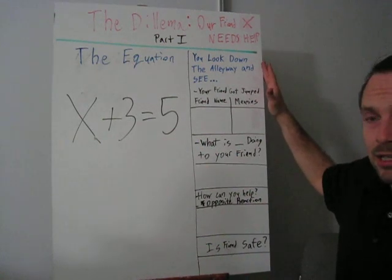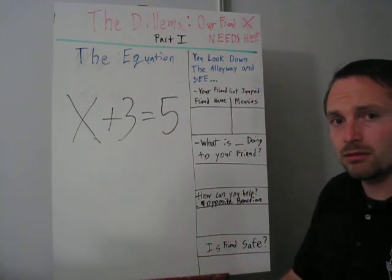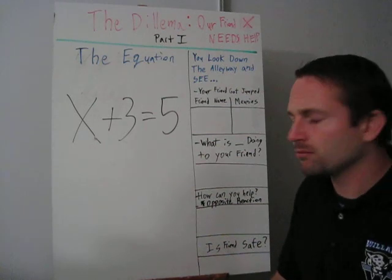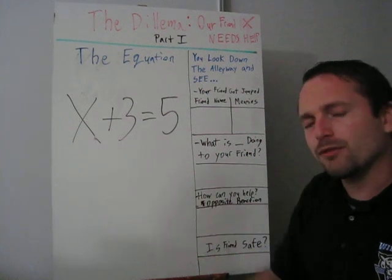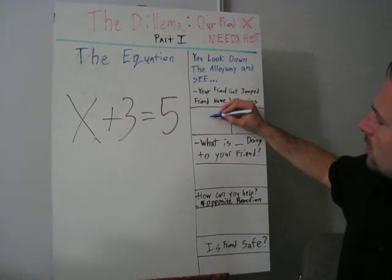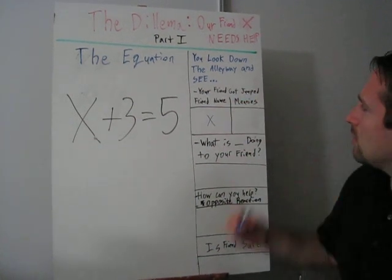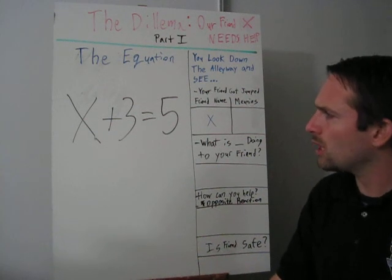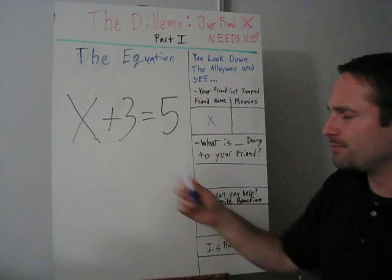You look down the alleyway, and you see your friend got jumped. What's your friend's name? Your friend is x. Who are the mean people who jumped your friend? Looks like it's only one. There's 3.